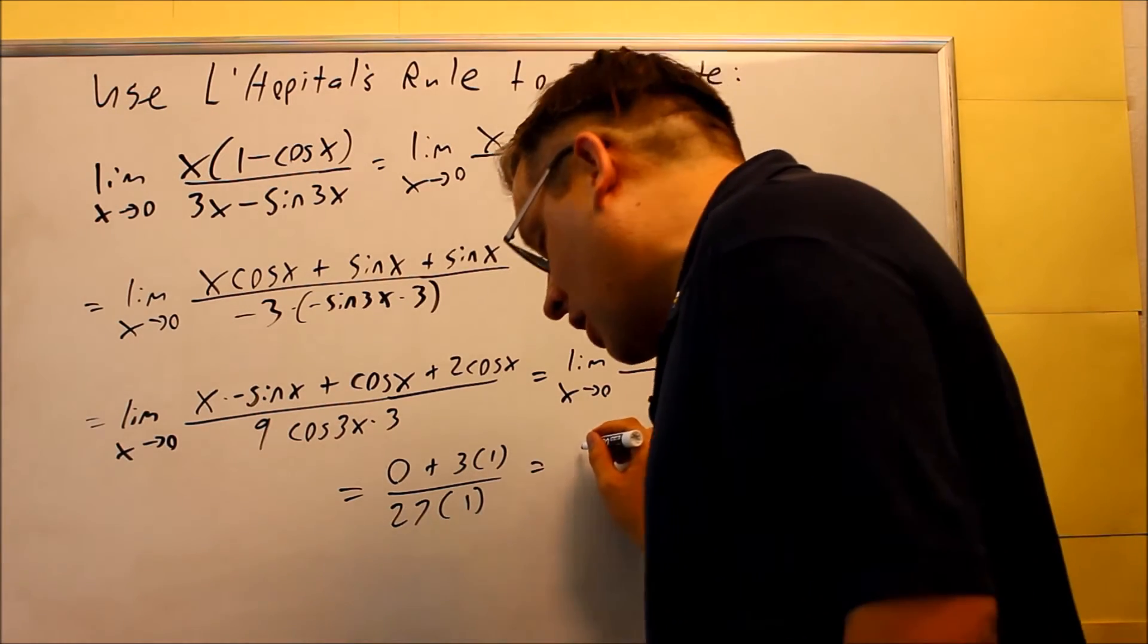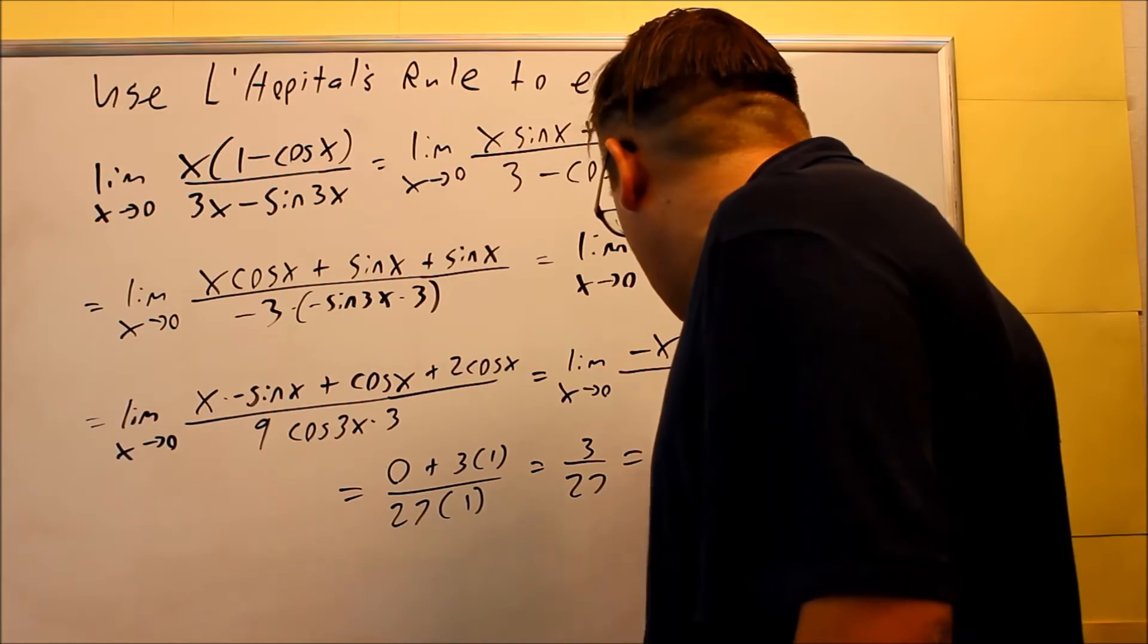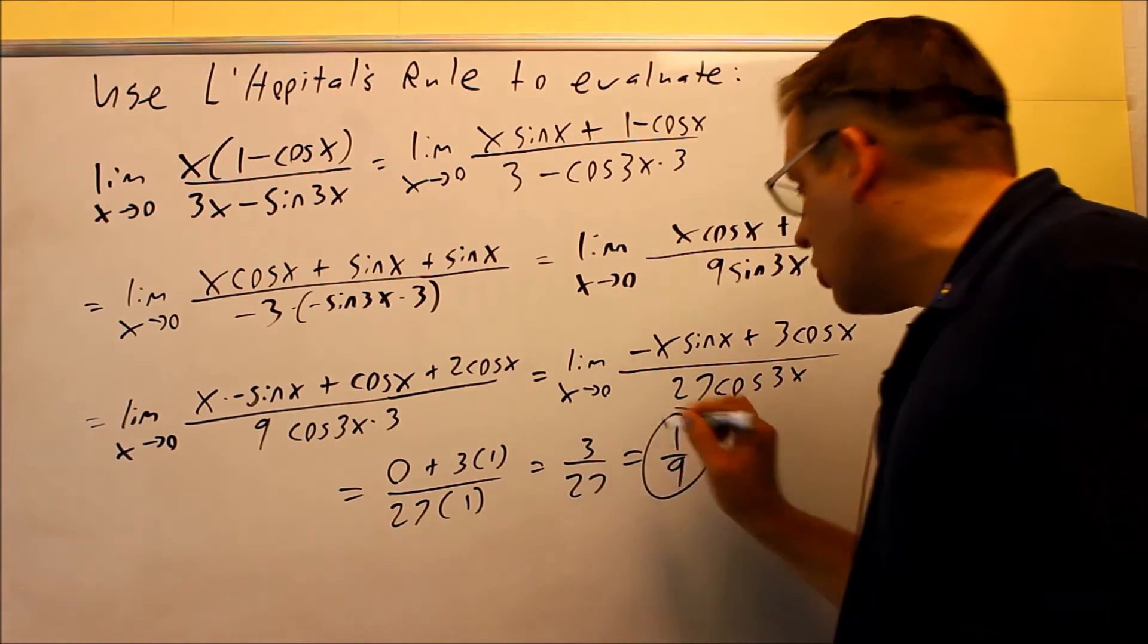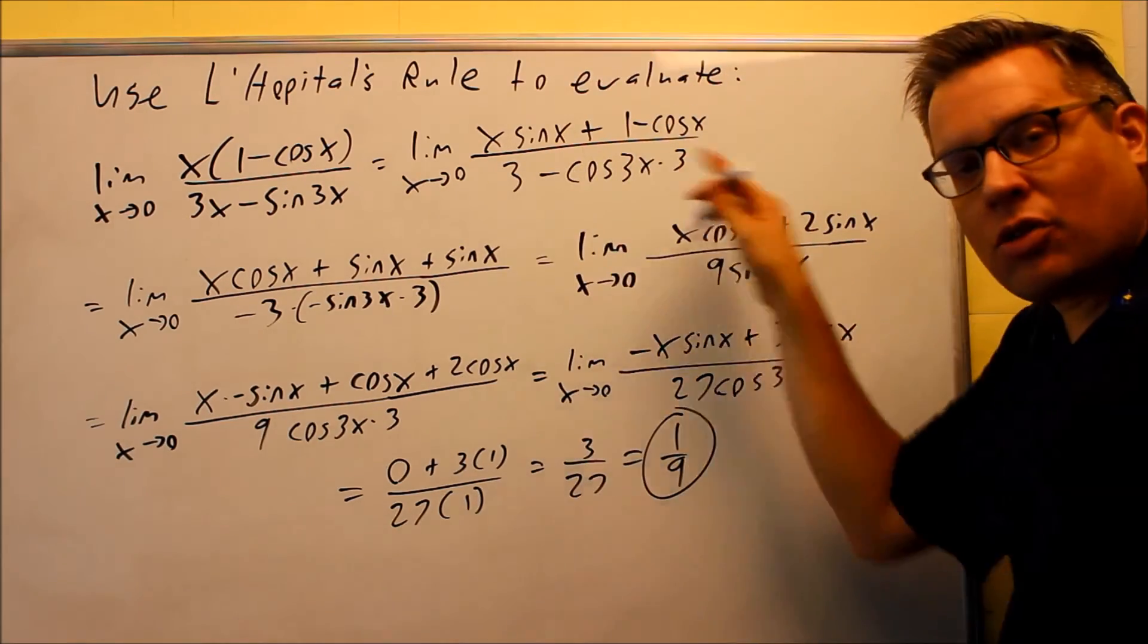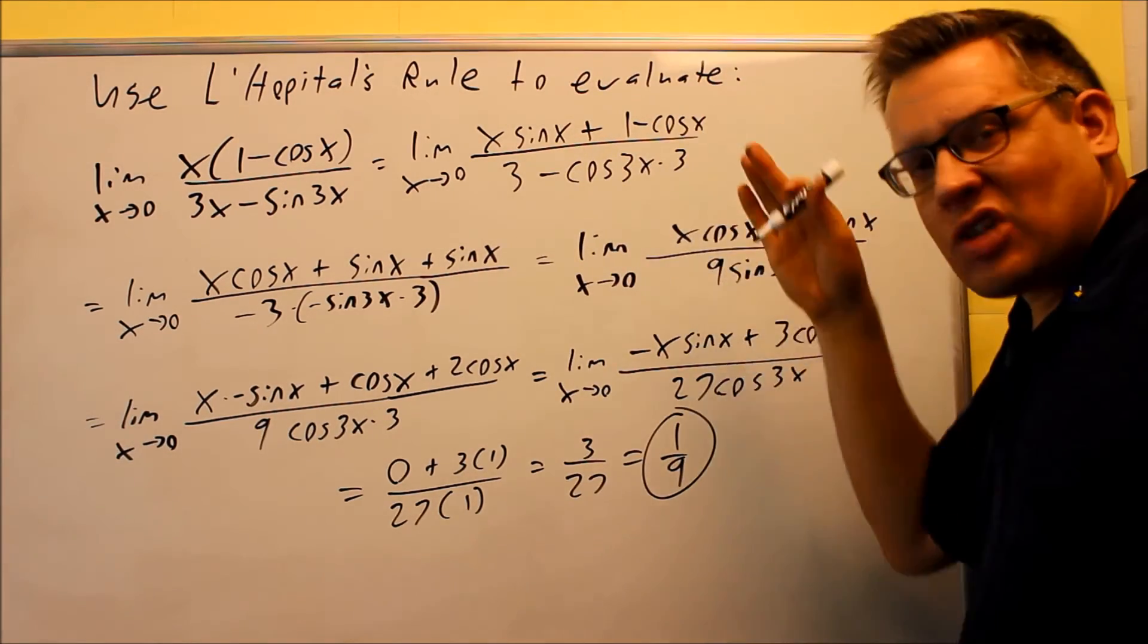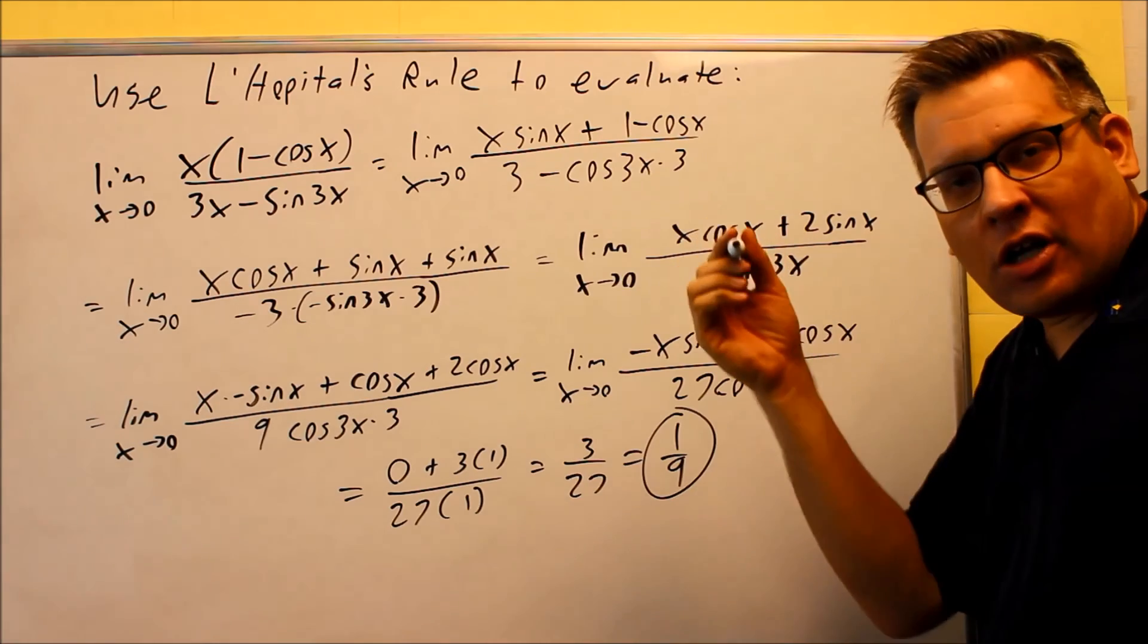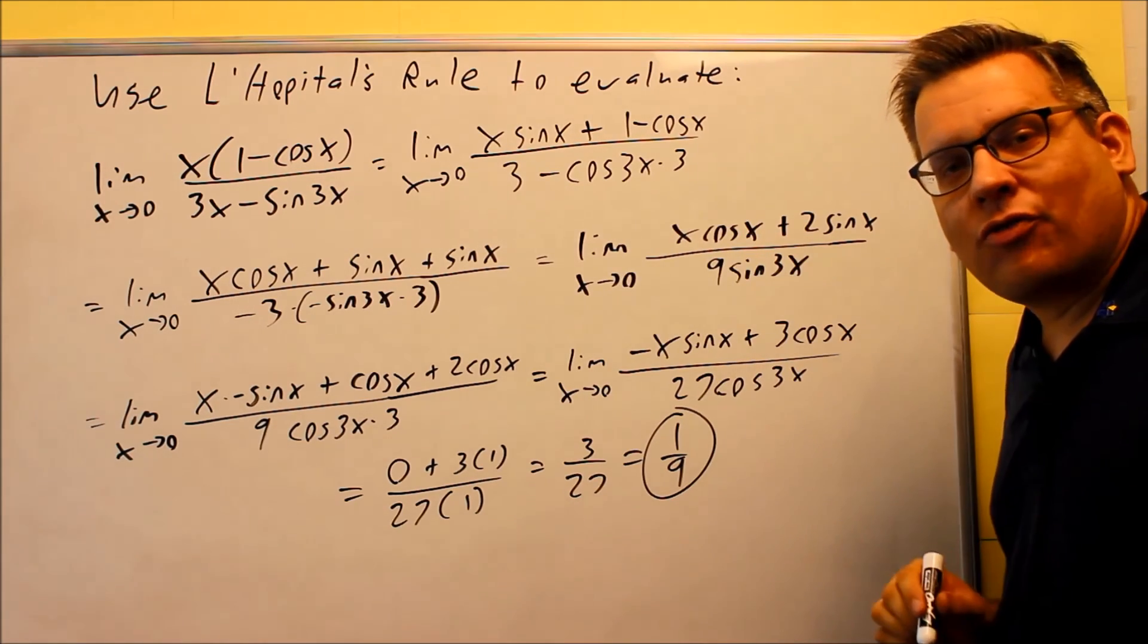So then, we end up getting 3 over 27, which is going to be equal to 1 ninth. So 1 ninth would be your exact answer of the whole thing. So again, we had to do that three different times. Again, just keep taking derivatives until you no longer get 0 over 0 or infinity over infinity.